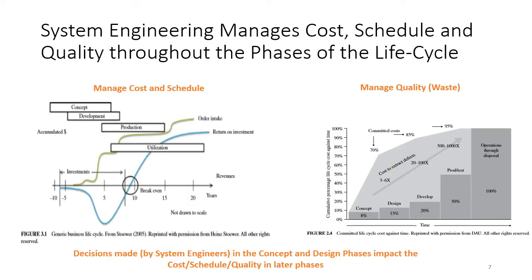System engineering sits at the nexus of quality and performance, while also managing cost and schedule for development. The INCOSI handbook has two diagrams: one emphasizing that system engineers must manage cost and schedule throughout the life cycle, and another pointing out that work done in the initial concept and design phases has big impacts in the later phases. It is much cheaper to identify a bug in the early phase than to find and fix a bug in production. So system engineers must manage quality, cost, and schedule — an important responsibility.